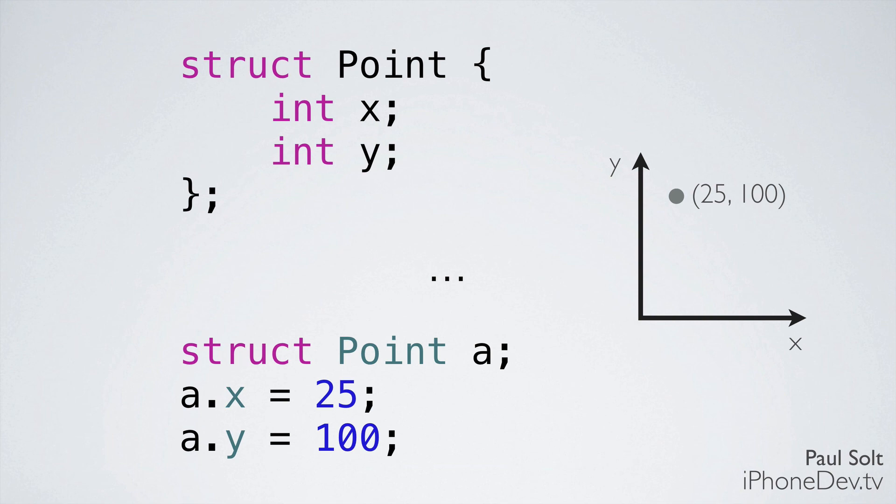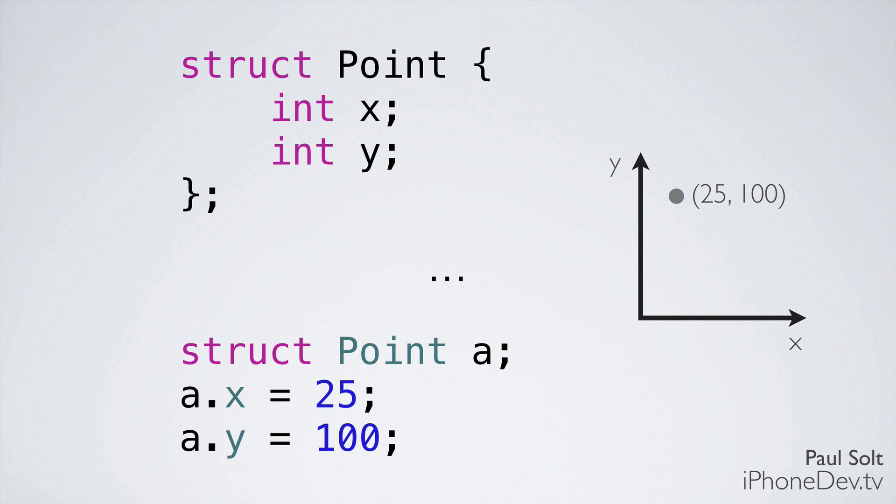So that's it for working with structures. So what we've learned today are these different types. We've got our integers, our floating point numbers, also known as decimal numbers, our characters, pointers, and structures. We'll be using these to create complex programs. And we'll build upon a lot of these concepts as we move into Objective-C.